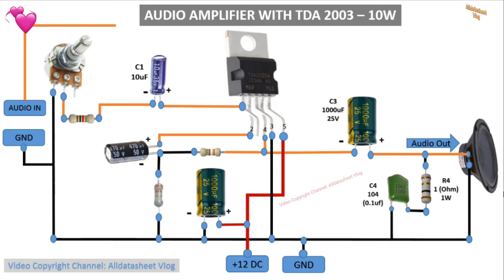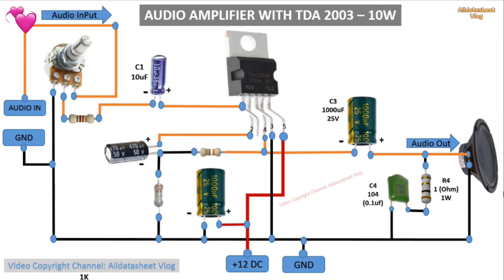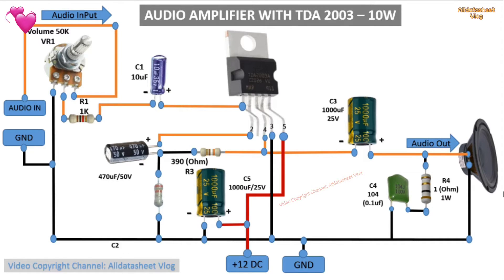R2 is 3.3 ohms, less than 10 ohms, greater than 2. R3 is 390 ohms — it can be R2 multiplied by 100.